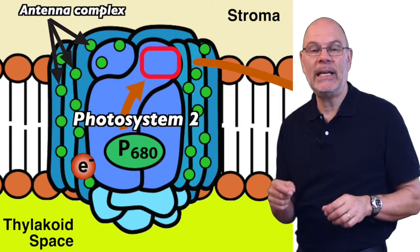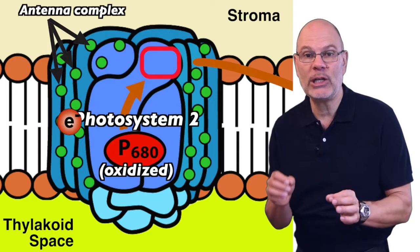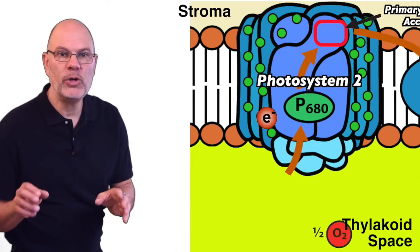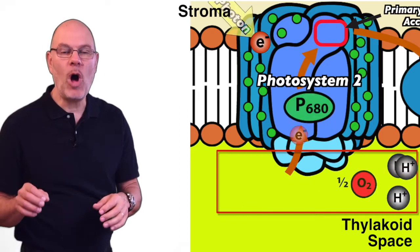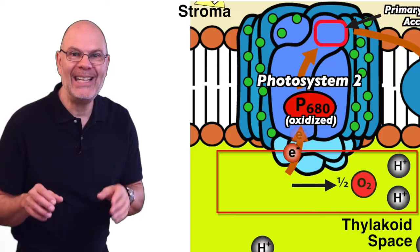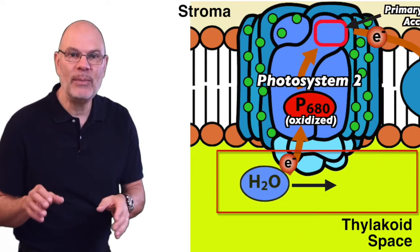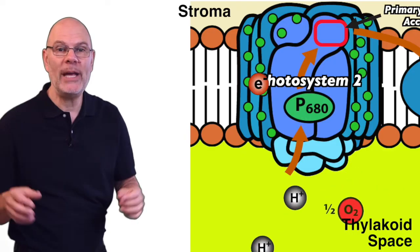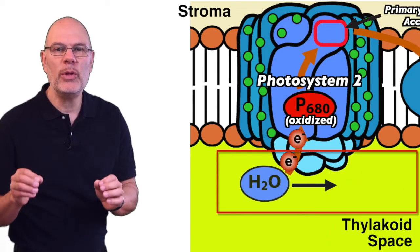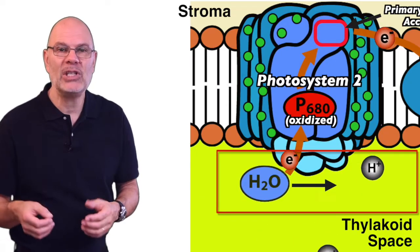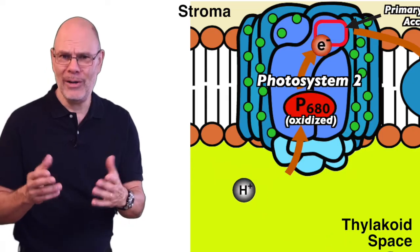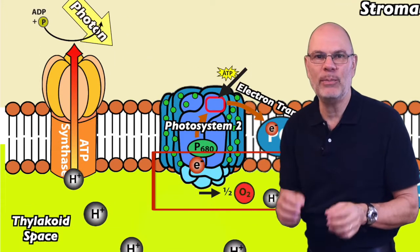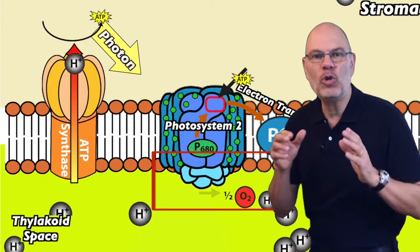Let's return to P680, which was oxidized when it lost an electron to the primary electron acceptor in photosystem II. To replace these lost electrons, a water-splitting enzyme complex in photosystem II rips electrons away from water, oxidizing it. This causes water to dissociate into two protons and one oxygen atom. The oxygen atom immediately binds with another oxygen atom to form molecular oxygen, O2, which diffuses away. This splitting of water is the source of the electrons that photosynthesis is based on, and the molecular oxygen that makes up our atmosphere. The protons that result from water splitting also enhance the proton gradient, increasing ATP synthesis.